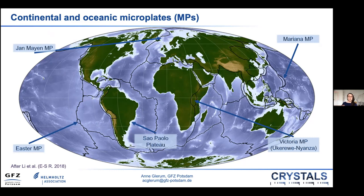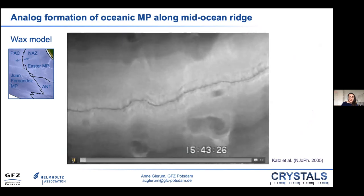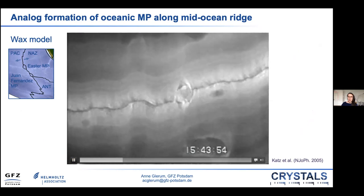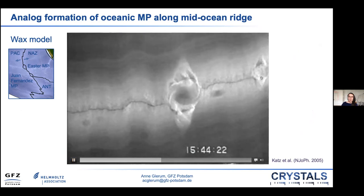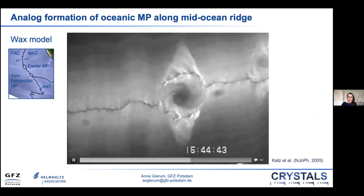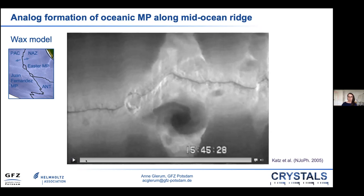Both analog and numerical modeling have been used to better understand under what conditions microplates in extensional settings form. For example, oceanic microplates like Easter have been studied with wax models of oceanic spreading, leading to amazing movies showing how overlapping spreading centers nucleate along oblique sections, the microplate starts growing and rotating, and distinct triangular areas form from the juxtaposition of very new lithosphere against older lithosphere. A second microplate even forms, and then one of the ridges goes extinct and the microplate attaches itself to the lower major plate.